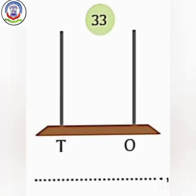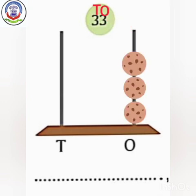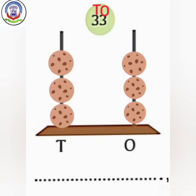Next is 33. We will write 10s and 1s first. Here we will write 1s and here we will write 10s. How many 1s do we have? We have 3 ones, so we will make 3 beads at the 1s place. How many 10s do we have? We have 3 tens, so we will make 3 beads at the 10s place. The number name is 33.